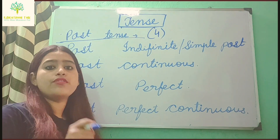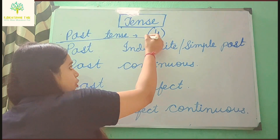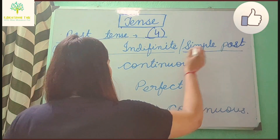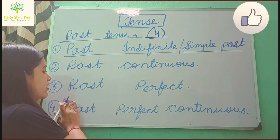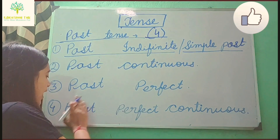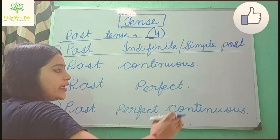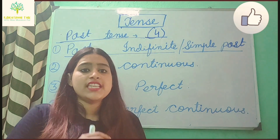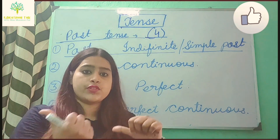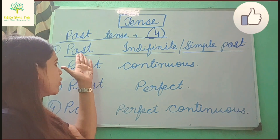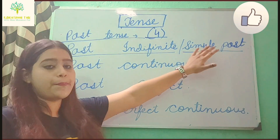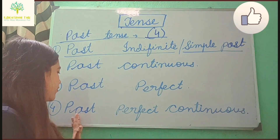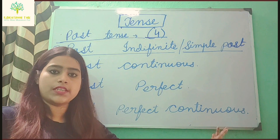Past tense is also divided into four parts. First is past indefinite or simple past. Second is past continuous. Third is past perfect tense. And fourth is past perfect continuous tense.